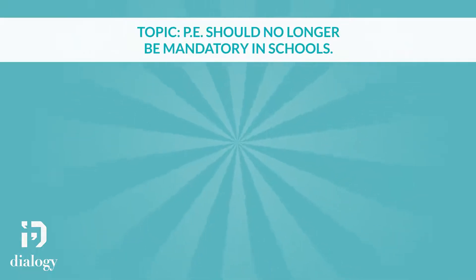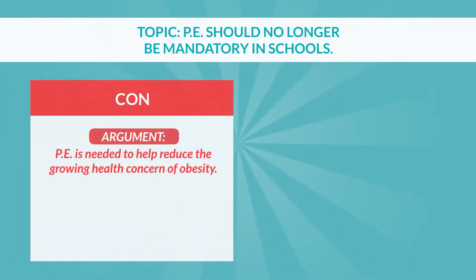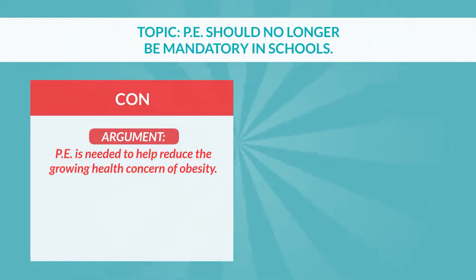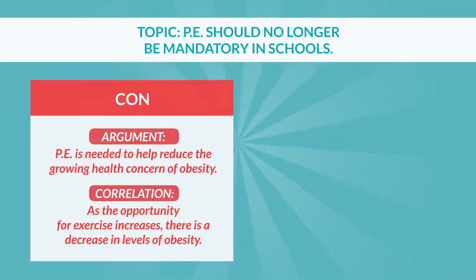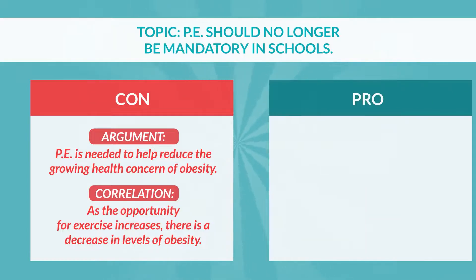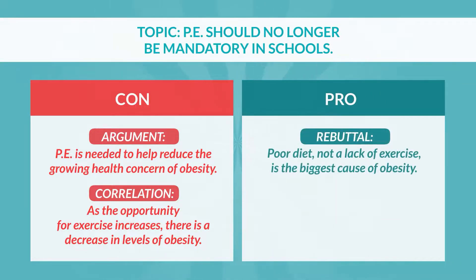Let's look at another example on the topic: P.E. should no longer be mandatory in schools. One team would argue that we need to have P.E. because there is a problem of obesity in the world today — kids are unhealthy and are gaining more and more weight. They could argue that weight loss and exercise have a positive correlation, and that giving kids more opportunities to exercise will lead to a decrease in obesity. The opposing team can challenge this by asking whether exercise is truly the cause of obesity, arguing perhaps that there is another more important cause, like eating unhealthy food. Even if the lack of exercise is associated with obesity, it is diet that impacts obesity the most.